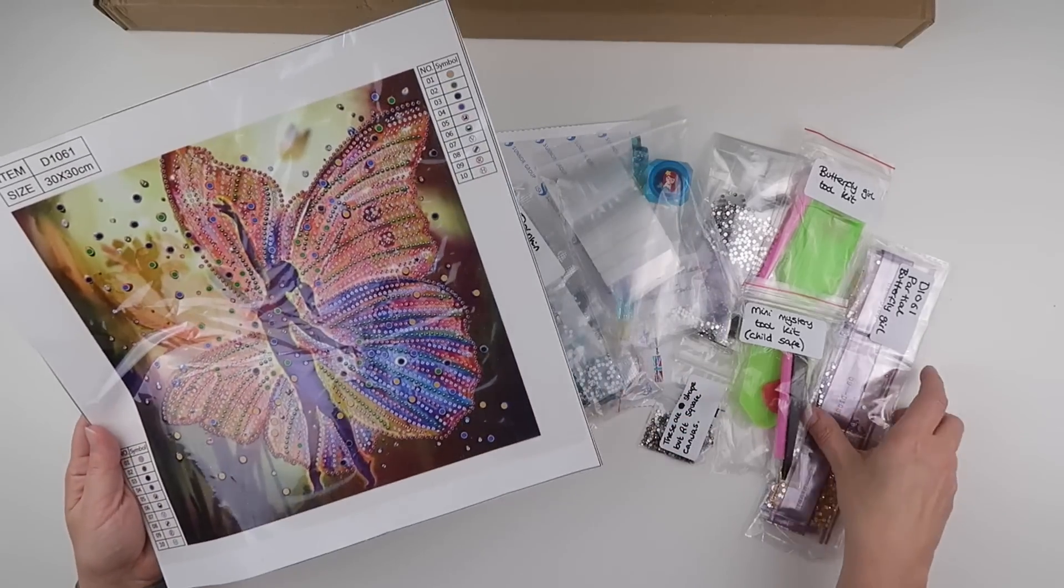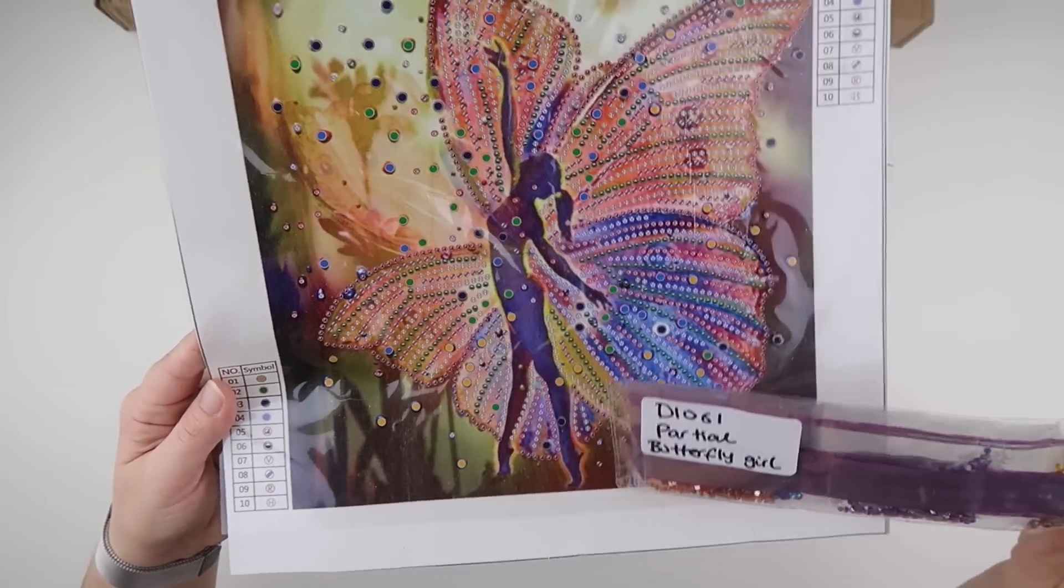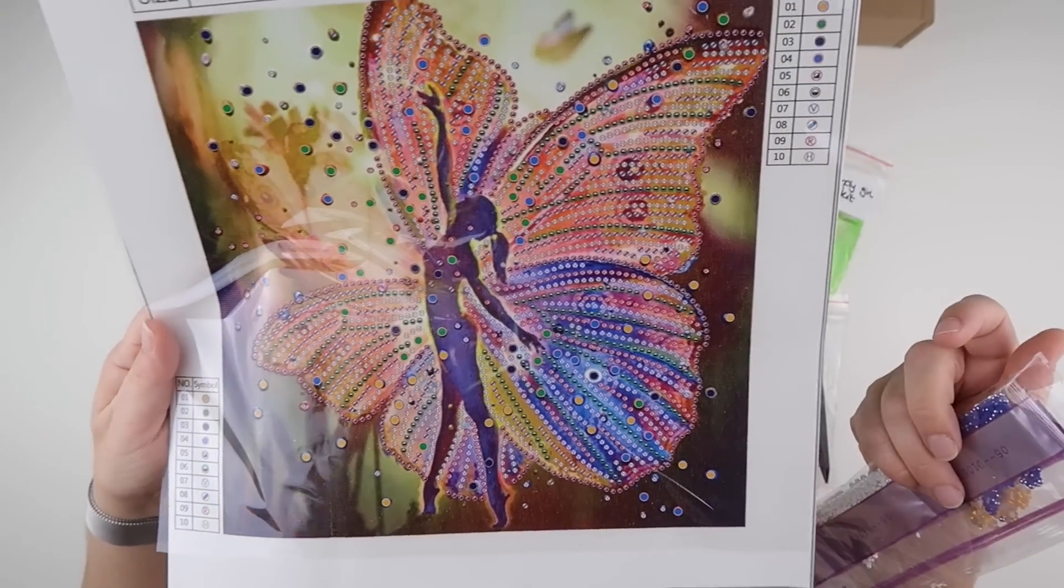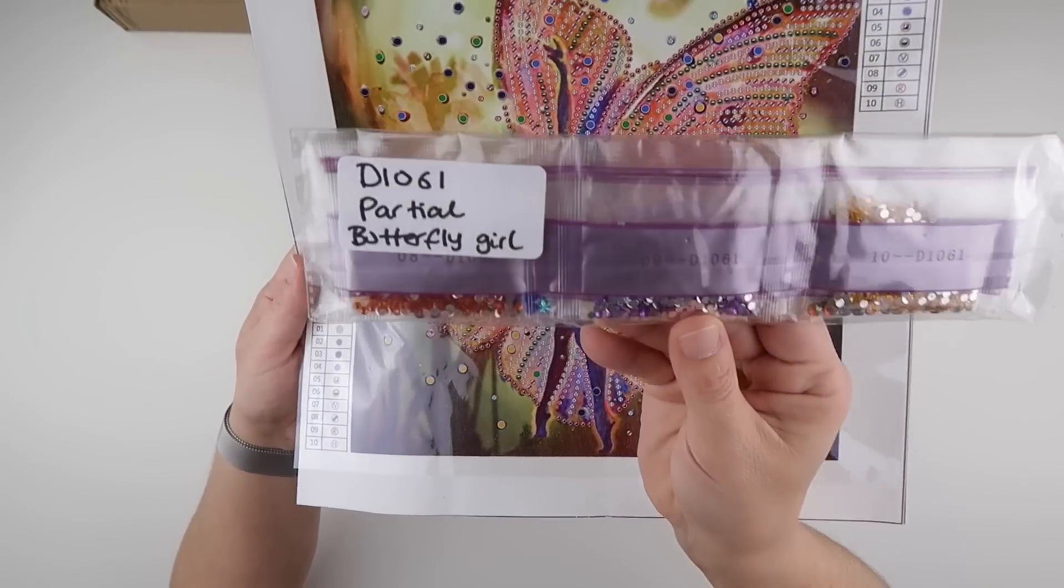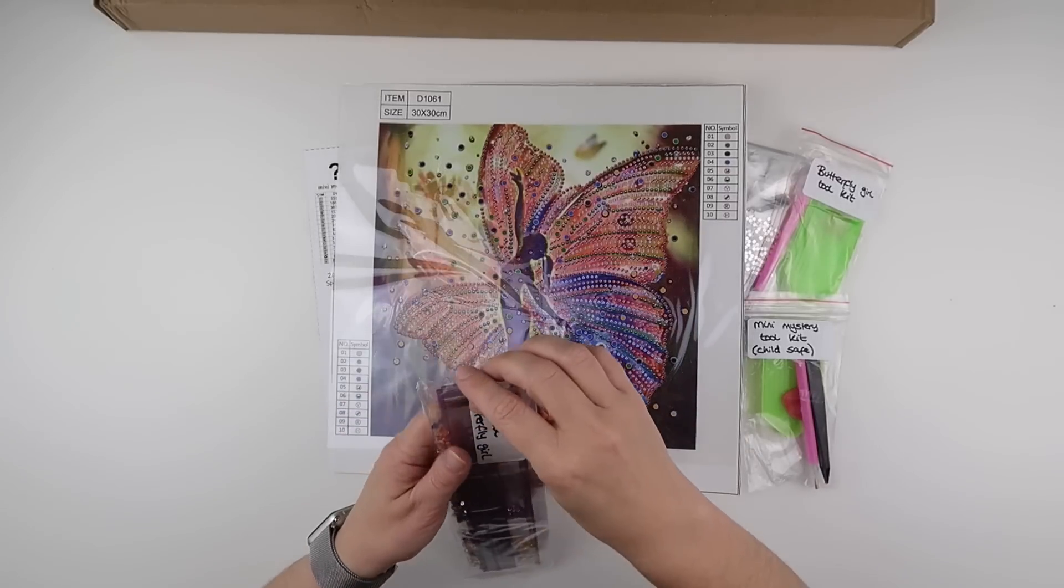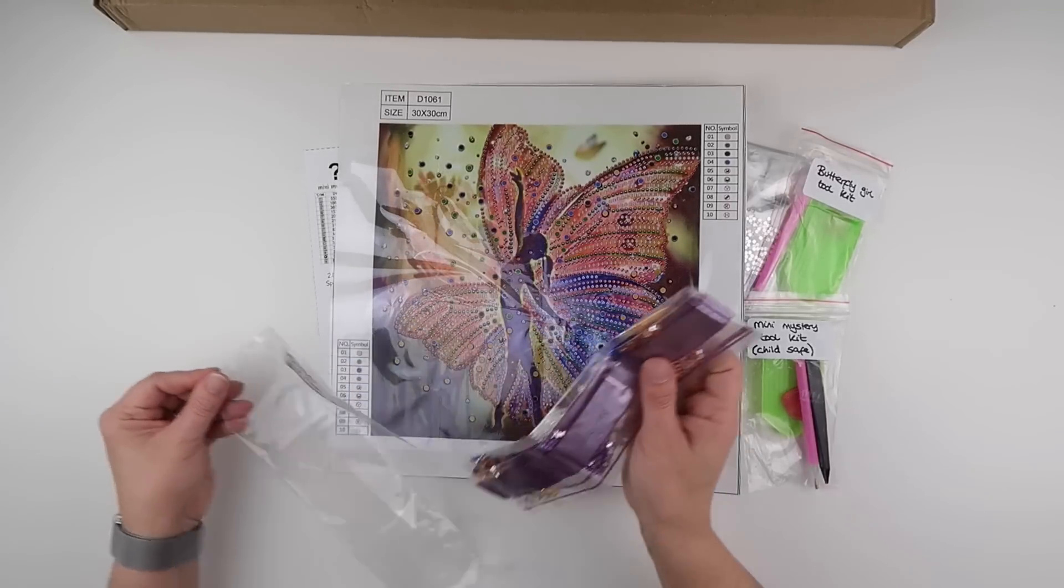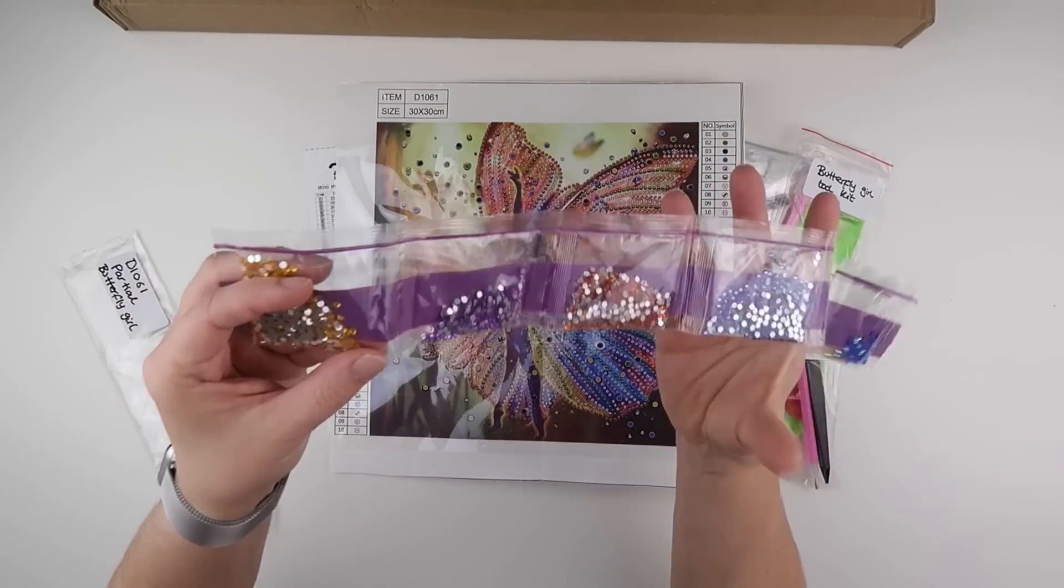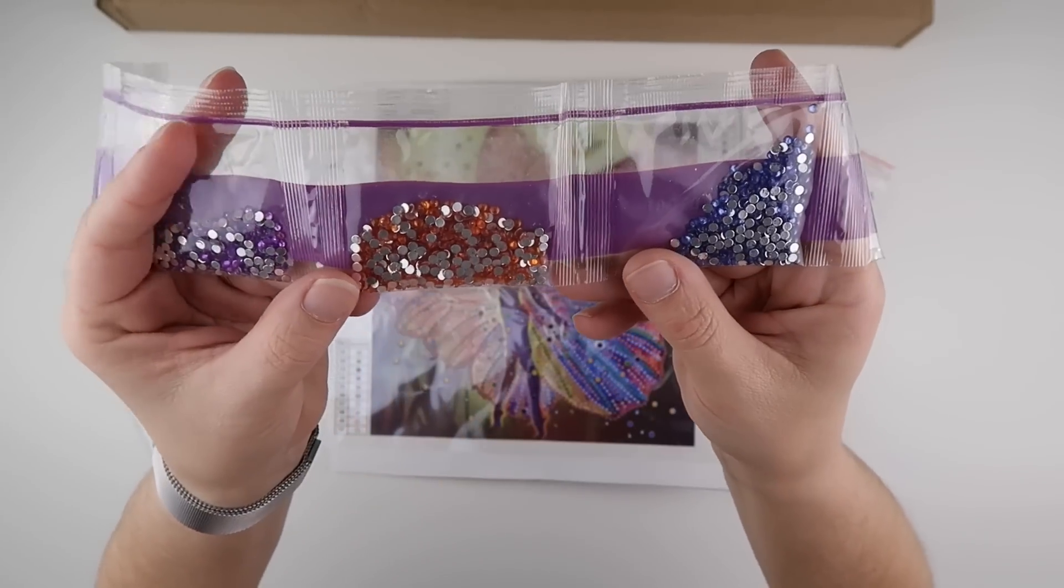First up we have this fairy, which they've labeled as the butterfly girl. This is a partial in special drill, and we've got quite a few different special diamonds. Let's have a proper look. This has all come flat like this, but we have some of the standard rhinestone diamonds in yellow, purple, orange, and blue.